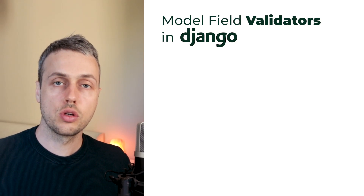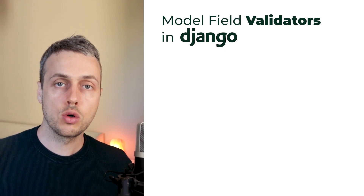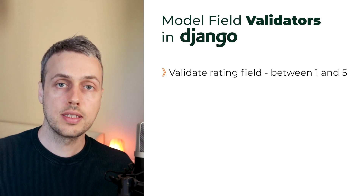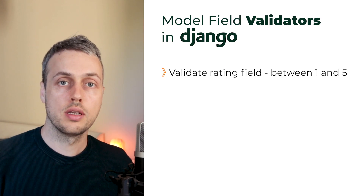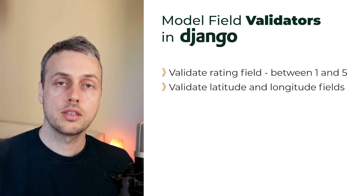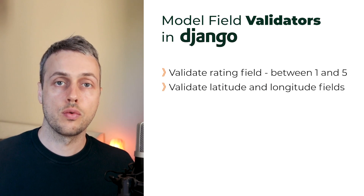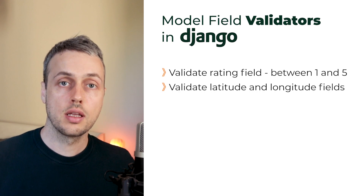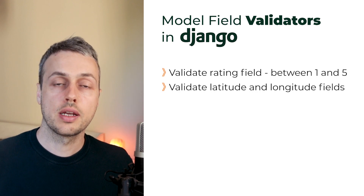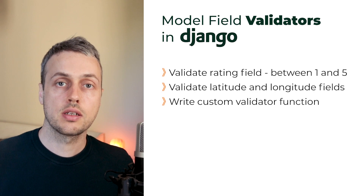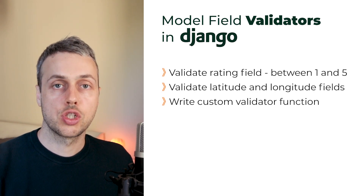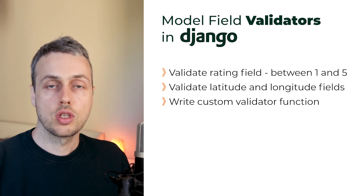In this video we're going to take a quick detour and learn about model field validators in Django. We're going to add a validator to the rating field to constrain it between one and five stars, and we're going to add validators to both the latitude and the longitude field of the restaurant model. Finally, we're going to learn how to create a custom validator as a function in Python and see how to attach that validator to a Django field. Let's get started.